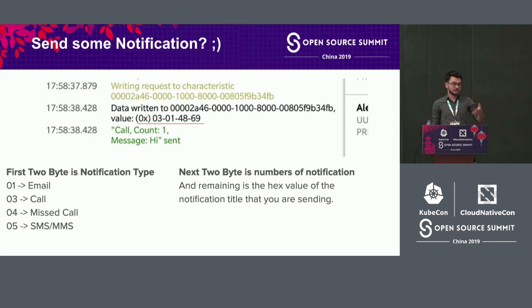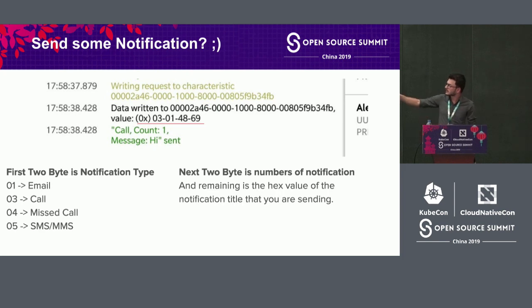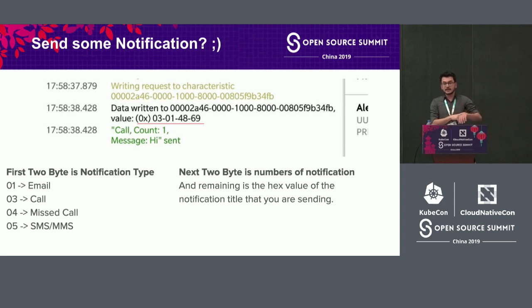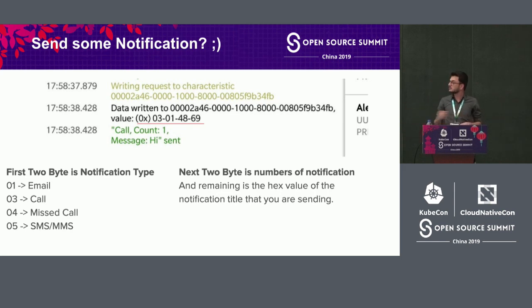Once I connected to the fitness tracker using HCATool and Gatool and wrote my scripts, I started reverse engineering the packets. I found it was sending values like 0x03, 0x01, 0x04, 0x06, 0x09 to a particular characteristic. I realized the first two bytes are the notification type — so if you want to send a notification saying 'Trump is calling you,' you could send 0x03; for an email notification you could send 0x01; for a missed call maybe 0x04.